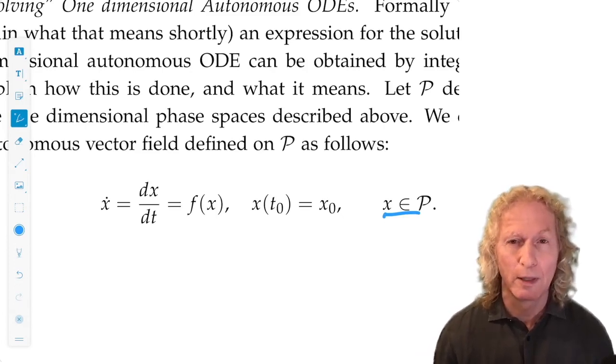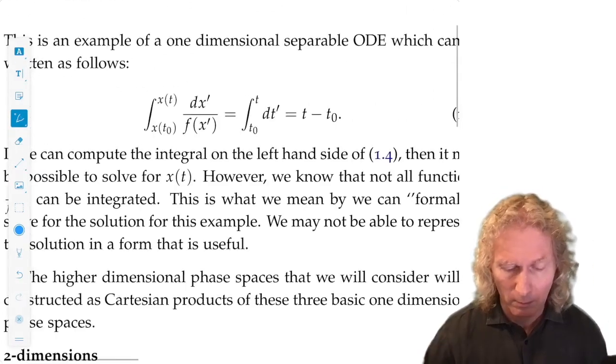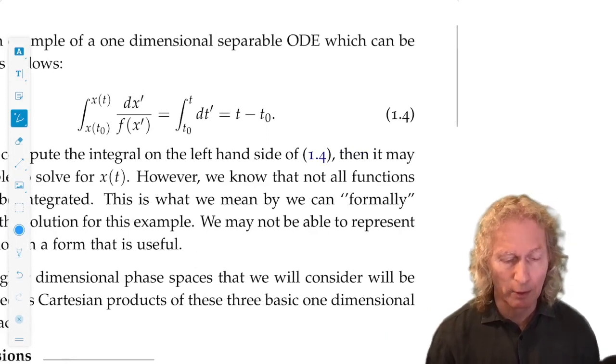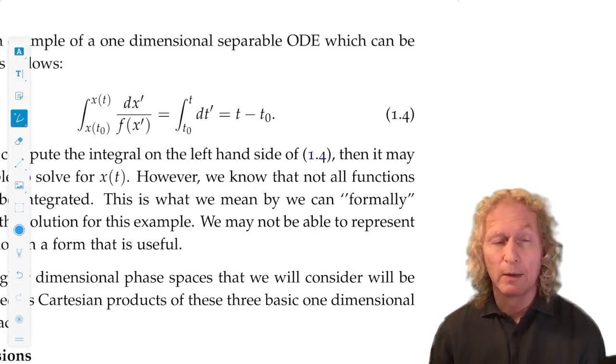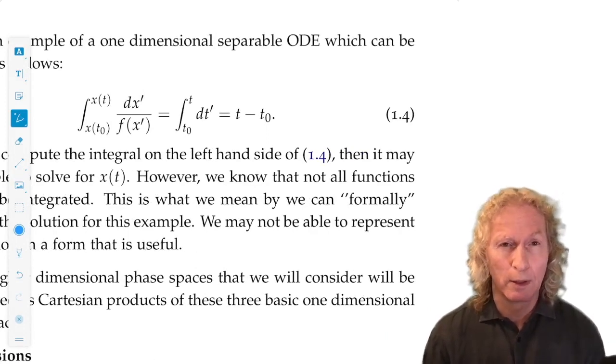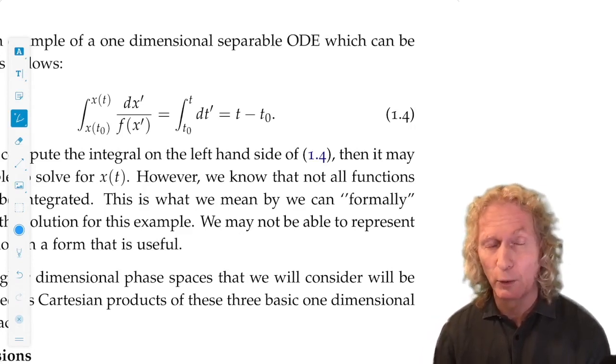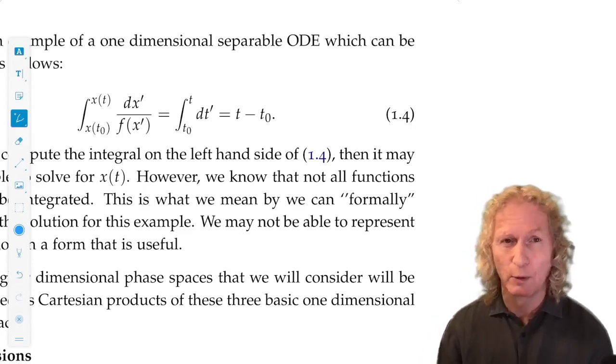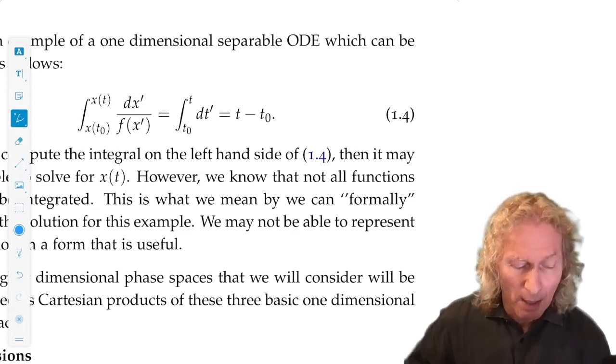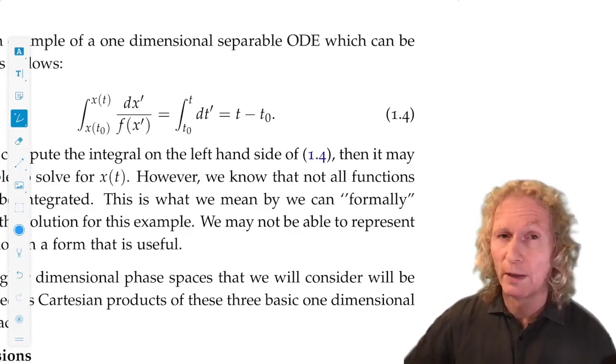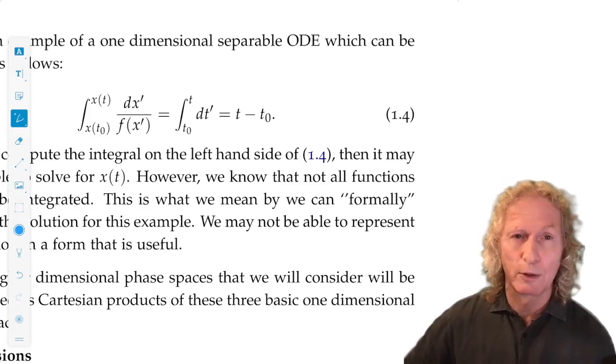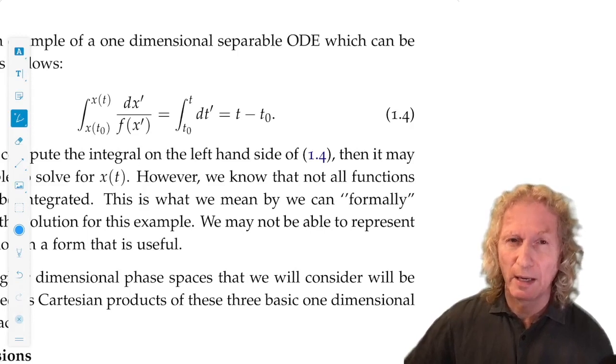We can write this equation in integral form. That equation is equivalent to 1.4. If we could do this integral, so if 1 over f of x was integrable, we didn't divide by zero, and it's at least continuous, and we could solve for x of t, then we would have the solution. But that's a lot to ask for.